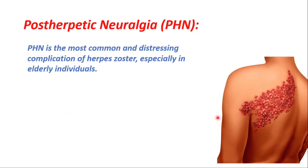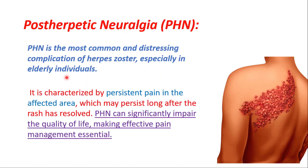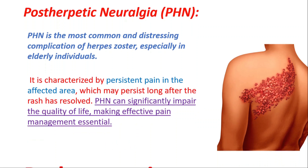Post-herpetic neuralgia is probably the most common and important complication — a distressing complication of herpes zoster, especially in elderly individuals. It is characterized by persistent pain in the affected area that persists long after the rash has resolved. It can significantly impair quality of life, making effective pain management essential.